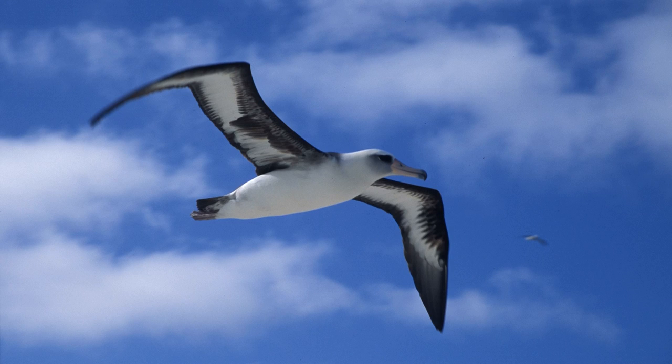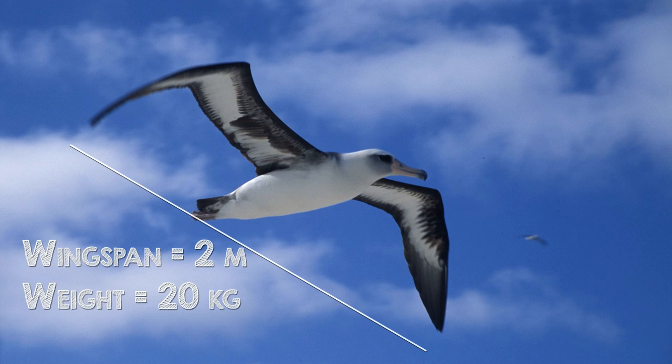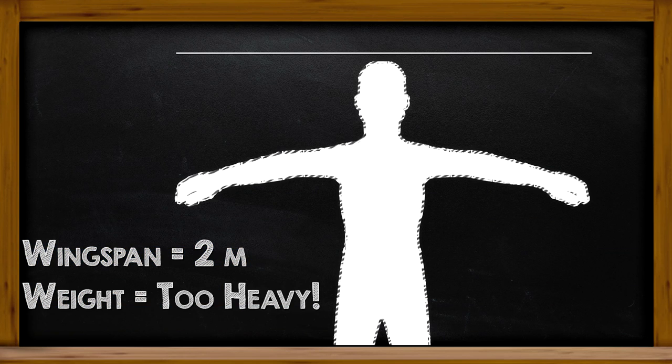If you look at a large bird like an albatross, it would have a wingspan of about two meters and weigh approximately 20 kilograms. Two meters is about the wingspan we might have with our open arms if we were to think of our arms as wings, but obviously we are a lot heavier than 20 kilograms.